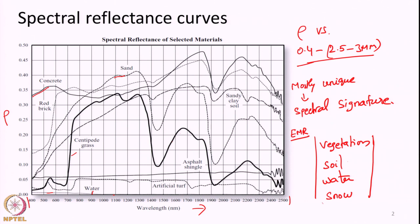In addition to this, at the end of this topic we are also going to be introduced to the concept of spectral indices. This is what we are going to cover in the series of lectures starting from today, perhaps over the next 3 to 4 lectures. First, we are going to start with the spectral reflectance curves of vegetation.